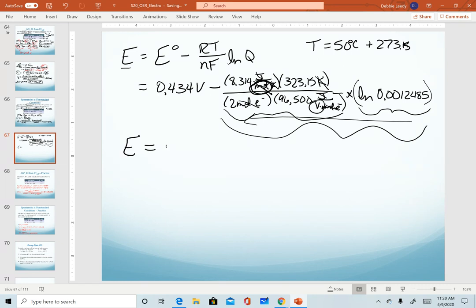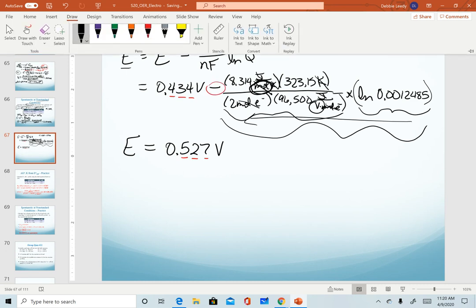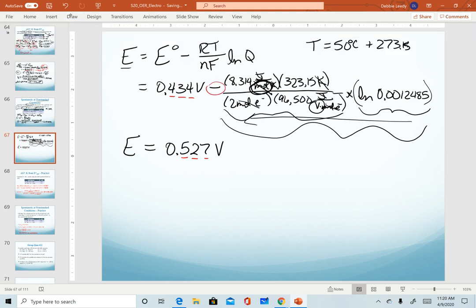Our final answer for this one, you should be getting a value of 0.527 volts. For sig figs on this one, we're going to go by decimal places in standard cell potential to determine decimal places in our final answer because our last step is subtraction. Since this value is greater than 0, that tells us that under those conditions, we still have a spontaneous battery. It is still running. It is still moving forward to reach equilibrium.